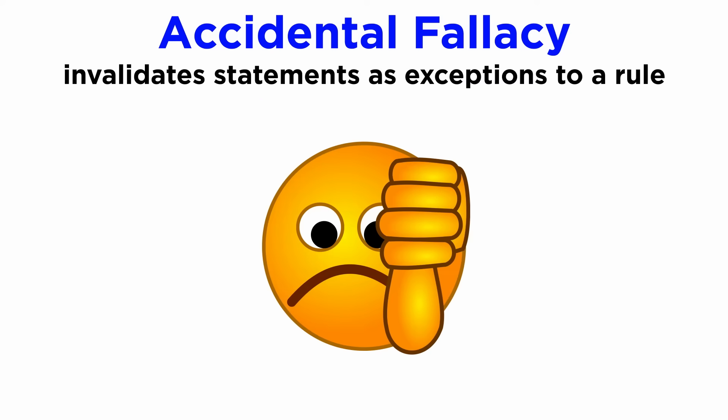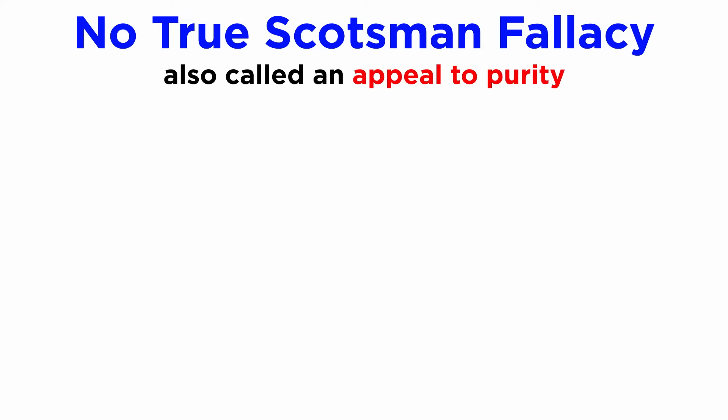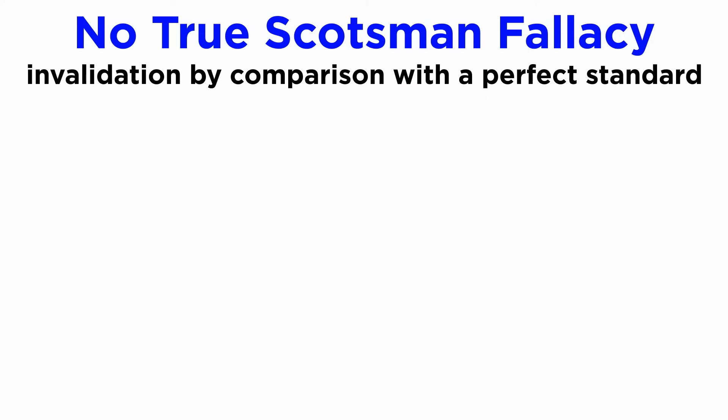Conversely, the accidental fallacy attempts to invalidate given statements as exceptions to a given rule, much like its more extreme version, the no true Scotsman fallacy, or an appeal to purity, which attempts to invalidate a statement by contrasting it with a hypothetical perfect rule or standard.